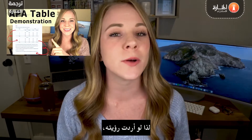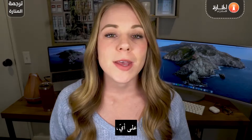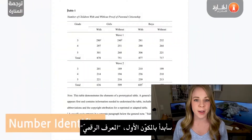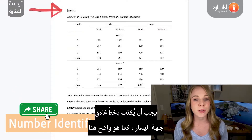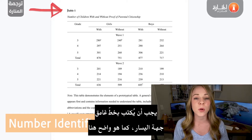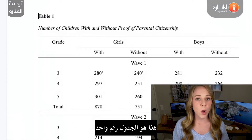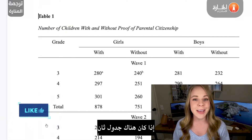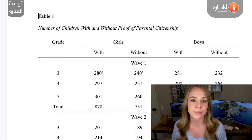If you're interested in watching that tutorial, be sure to check it out. Starting with the first component, which is the number identifier — it will always be the first component in your table, located flush left and typed in bold. This is Table 1 because it's the first table in my document. If you had a second table, you would label it Table 2, and so on.